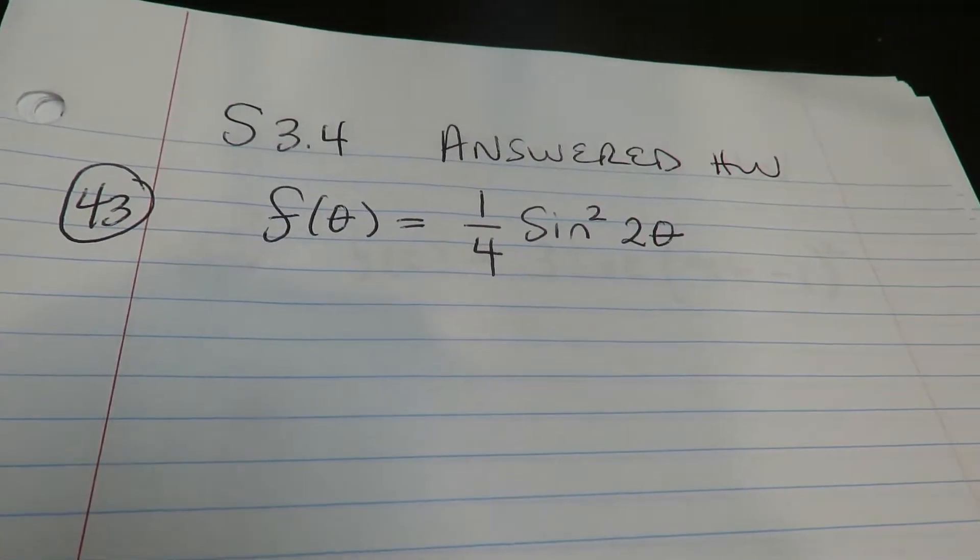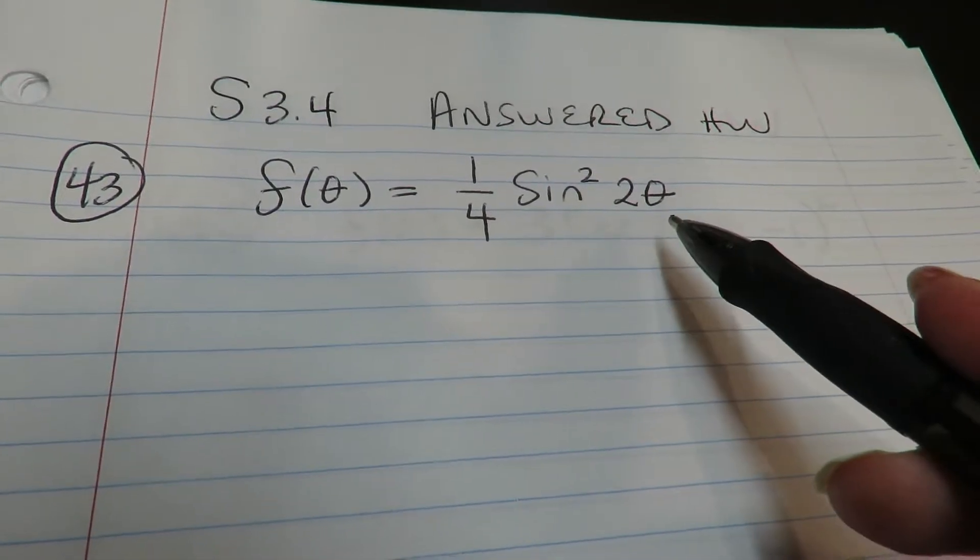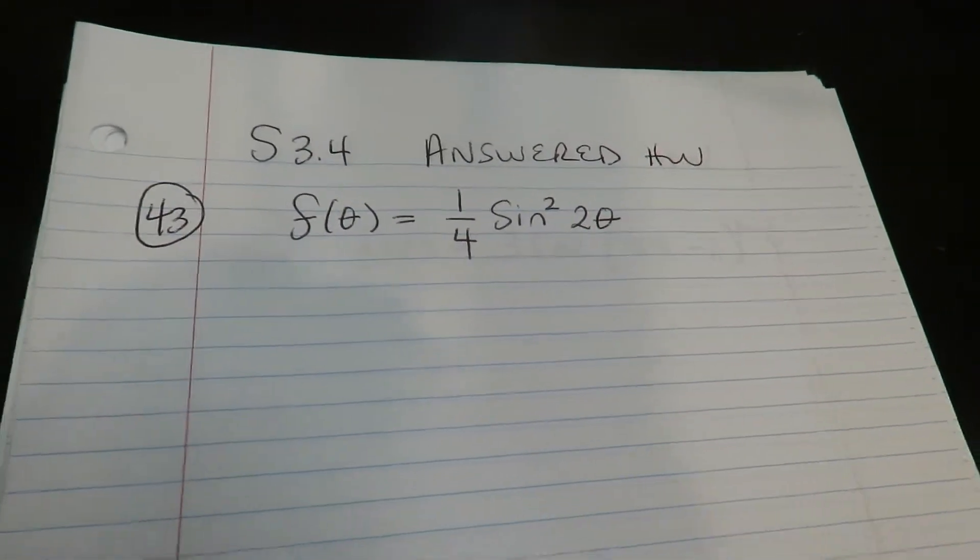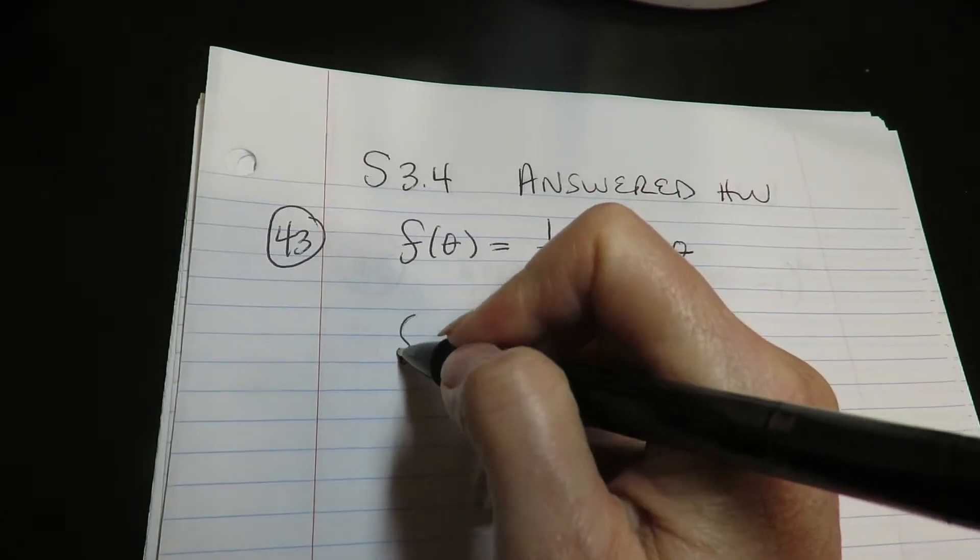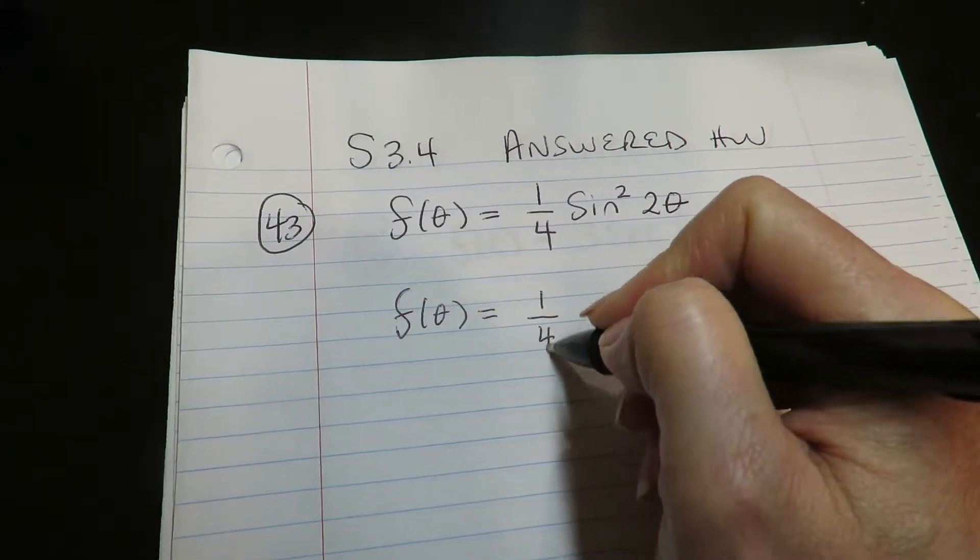Okay, gang, so when I look at this one, since it just has one variable, this is strictly chain. This is strictly chain with three layers.